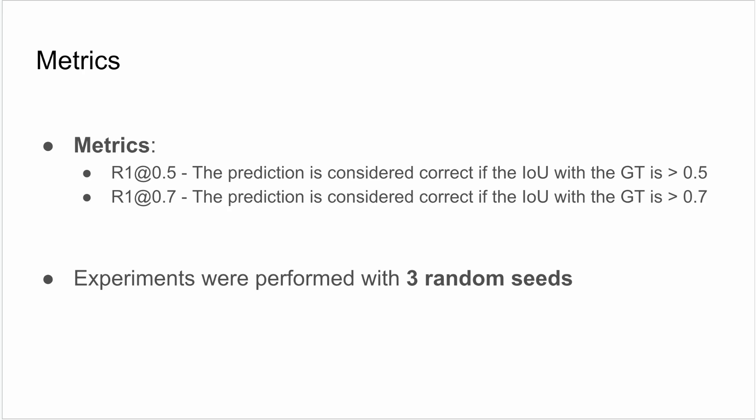Meanwhile, R1 at 0.7 requires a match of over 70%. For robust results, we test our approach with three different random seeds.